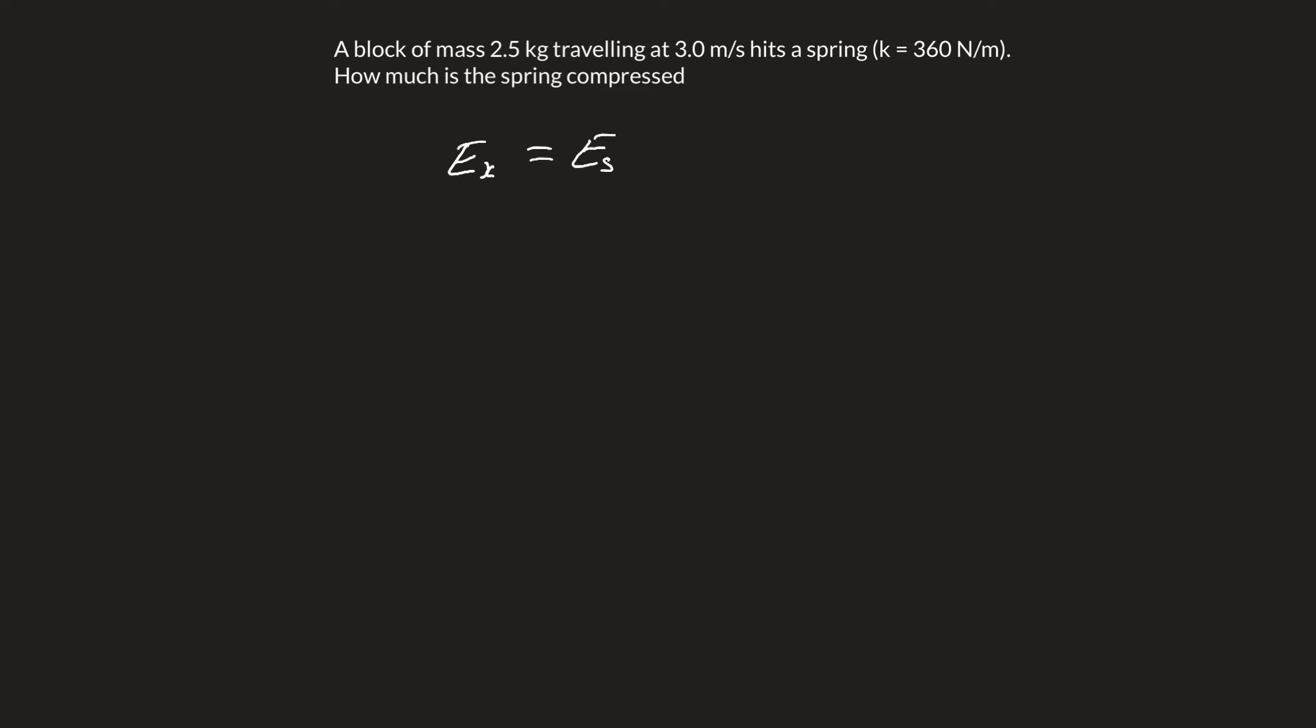We know our equations here, so our kinetic energy is one half mv squared, and our spring energy is one half kx squared. These halves are going to cancel, which is great. We're left with mv squared equals kx squared.